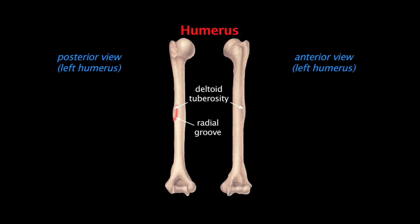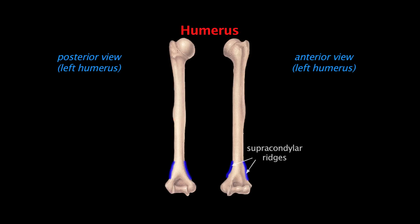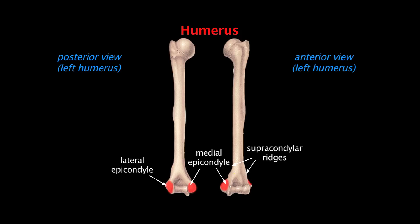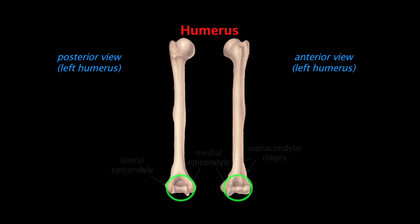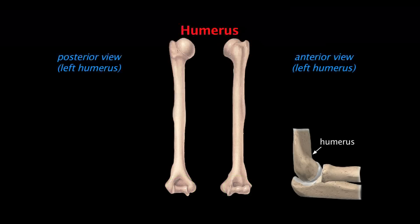The distal end of the humerus flares out medially and laterally, forming slight ridges on both sides known as supracondylar ridges. These ridges are located just above the medial and lateral epicondyles, which lie just above the condyle of the humerus. The condyle is a prominence that usually serves as a point of articulation, and in this case the condyle of the humerus helps form the elbow joint.